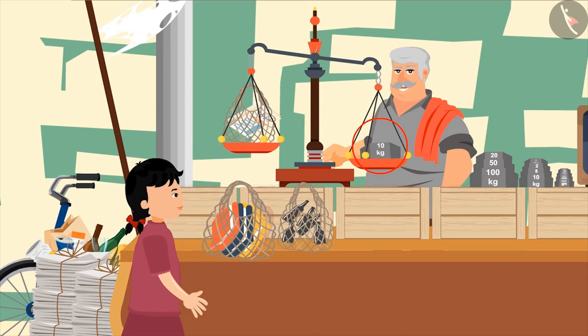Look, the side carrying 10 kg weighing stone moved downwards while the side carrying the newspapers moved upwards. This means the weight of the newspaper is less than 10 kgs.